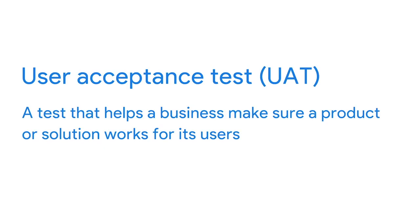Alternatively, you might conduct user acceptance tests. A user acceptance test, or UAT, is a test that helps a business make sure that a product or solution works for its users. A UAT must meet the agreed-upon requirements and deliver the expected results. This test is typically used to assess the end-to-end experience for the user of a new process or product, and takes place near the end of a product's development as an overall user experience test of the entire product, software, or service. UATs are sometimes referred to as beta tests.